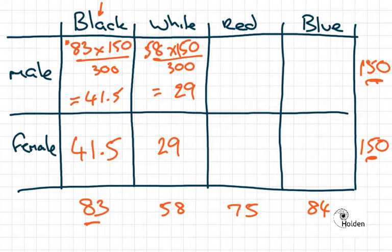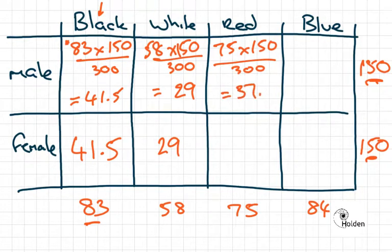Males that chose a red t-shirt. Well, we've got 75 people that chose red, 150 males total. So 75 times 150 divided by 300 gives us 37.5. 37.5 also for females.